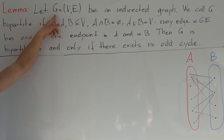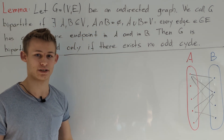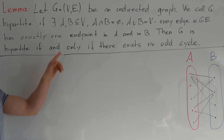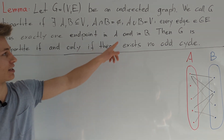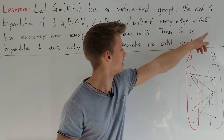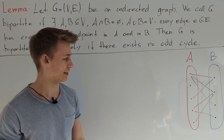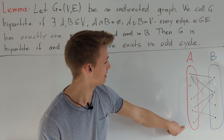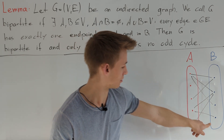We have a graph G with vertex set V and edge set E, and this graph is undirected. We call G bipartite if we can find two subsets A and B of the vertex set such that they have no elements in common and their union equals V, and for every edge in E one endpoint is in A and one is in B. I've drawn an example here — these five vertices are in set A and the other four are in set B, and every edge only goes from set A into set B.